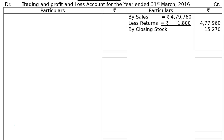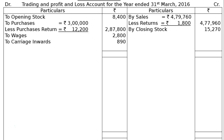On the debit side: opening stock rupees 8,400; purchases rupees 3,00,000 less purchases return rupees 12,200 (shown in the credit column of the trial balance), giving rupees 2,87,800 in the final column. Factory expenses rupees 2,800; carriage inwards rupees 860. Total the credit side: rupees 4,93,230.